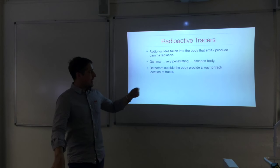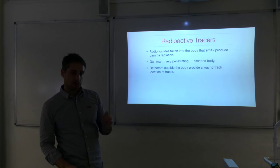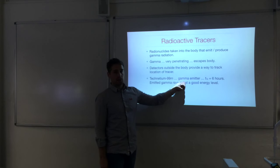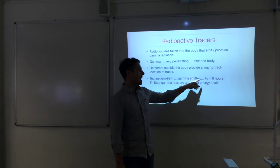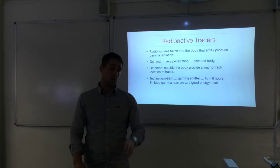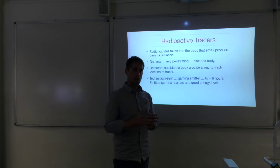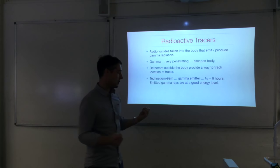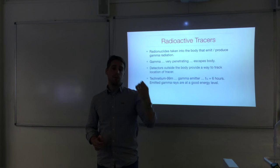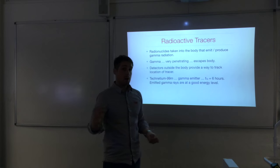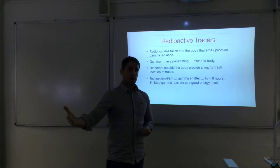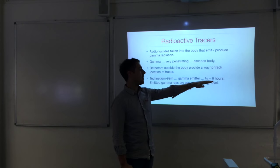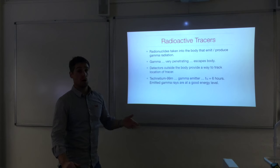Sophisticated detectors outside the body provide information about where the radionuclide originated. Technetium-99m is a very common tracer — it is a gamma emitter only, with a half-life of six hours. That's useful: you have enough time to complete your survey before the number of decay events becomes too small, but it's not so long that the patient is exposed for weeks. Six hours is the physical half-life, and the biological half-life is also six hours.